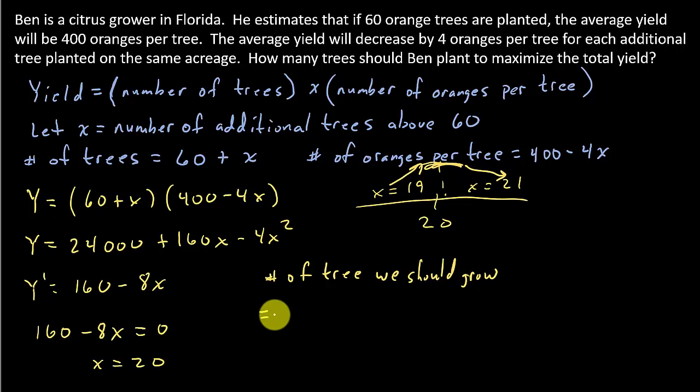The total number of trees would be the 60 plus the 20 additional, which would make it 80 trees, and there's your answer.